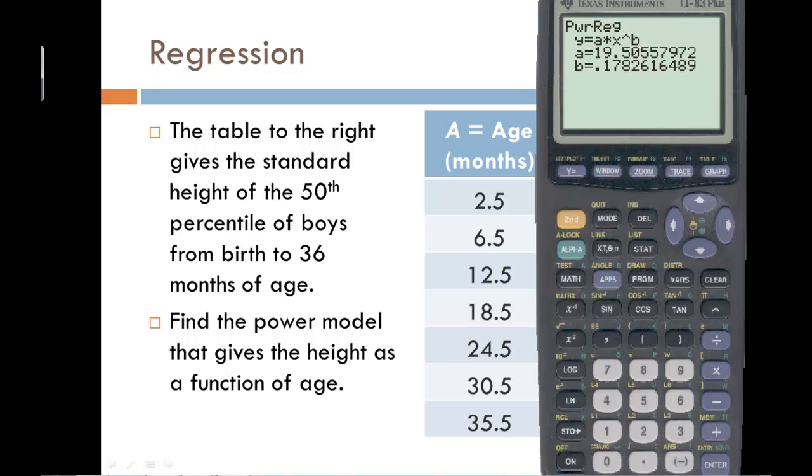And so we get that the height as a function of the age will be equal to 19.5056 times A, and if you look at it on the calculator it's X raised to the B power. So this capital A will be raised to the 0.1783 power, and I just rounded my decimals to four decimal places.